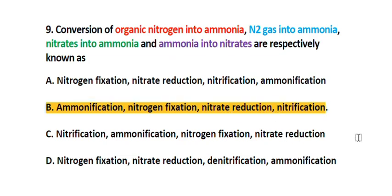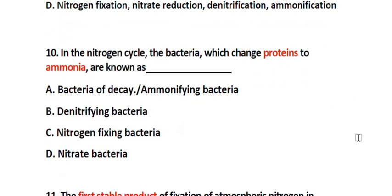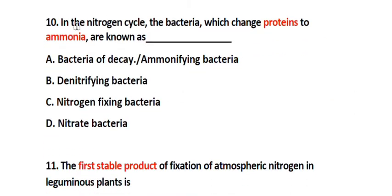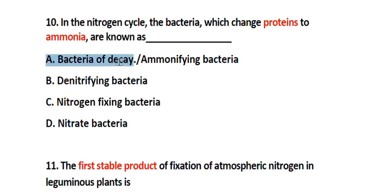Question number 10. In the nitrogen cycle, the bacteria which change protein to ammonia are known as: Option A. Bacteria of decay or ammonifying bacteria, Option B. Denitrifying bacteria, Option C. Nitrogen fixing bacteria, Option D. Nitrate bacteria. The correct answer is Option A. Bacteria of decay or ammonifying bacteria.